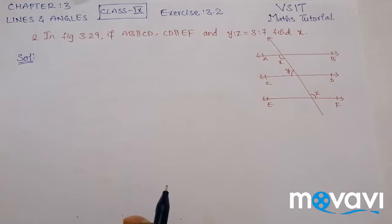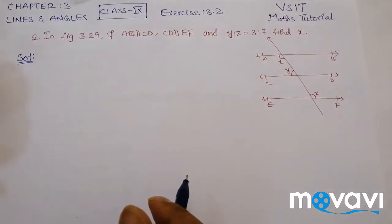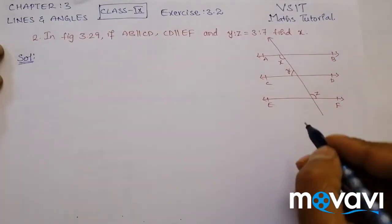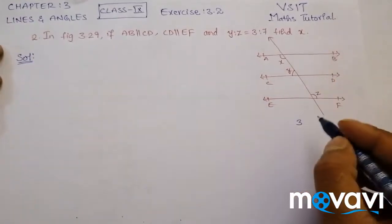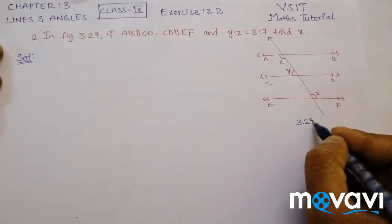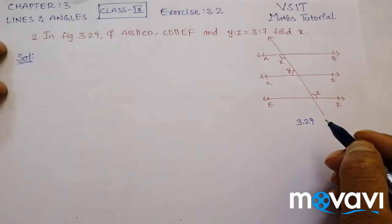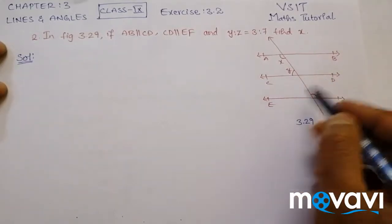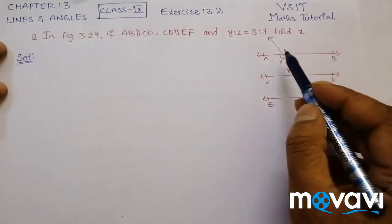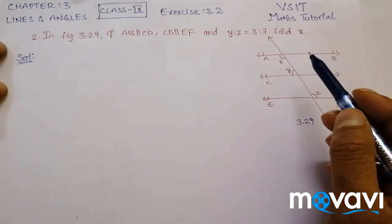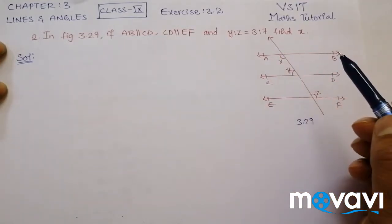This is the second question of exercise 3.2 of chapter Lines and Angles of class 9. The question given here is: in figure 3.29, if AB is parallel to CD and CD is parallel to EF, and Y is to Z is equal to 3 is to 7, find X.